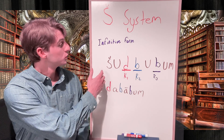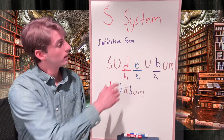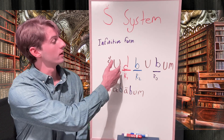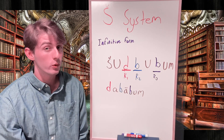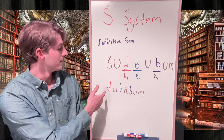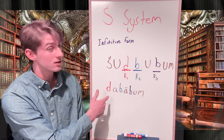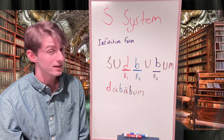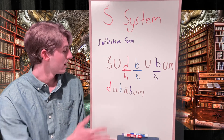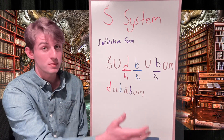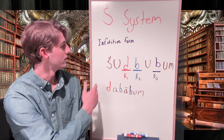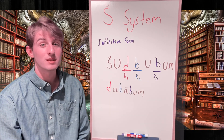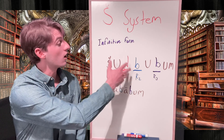Here we have the word shudbubbum, which means 'to cause to speak.' This comes from the root letters d, b, and b, which we would find in the dictionary as the G system infinitive dababum, meaning 'to speak.' So as you can see, this G system meaning 'to speak' in the Sheen system infinitive takes on a causative effect, giving us the meaning 'to cause to speak.'